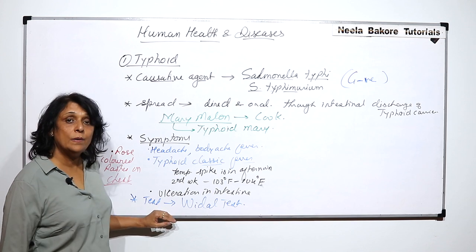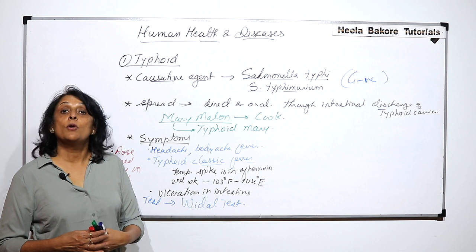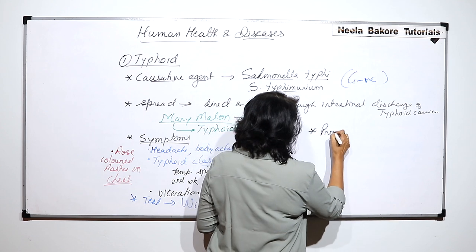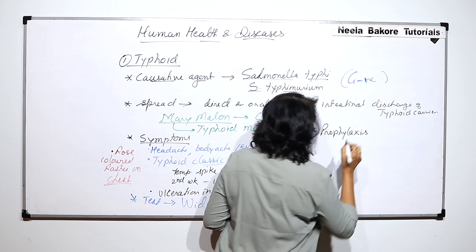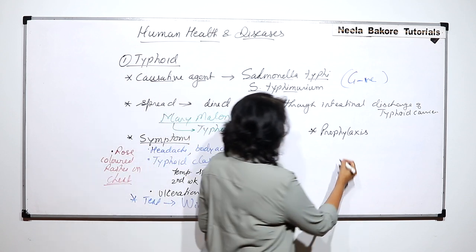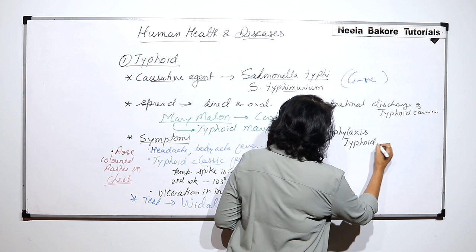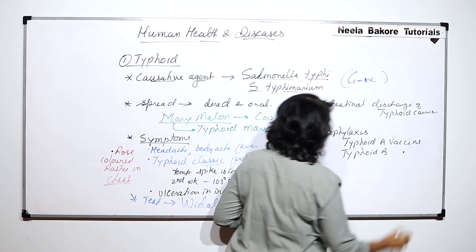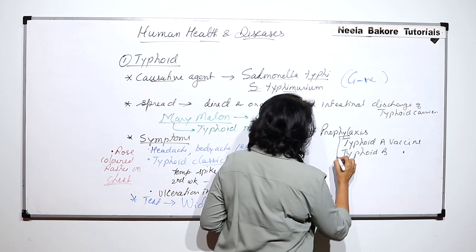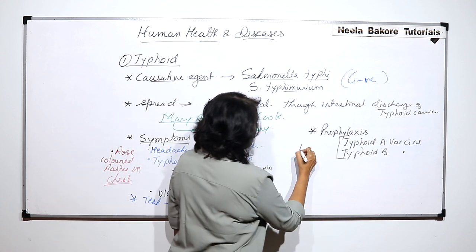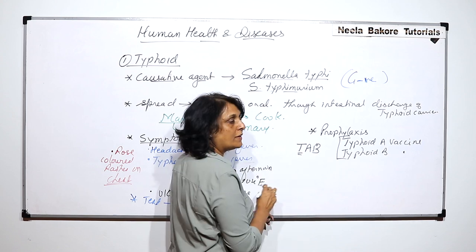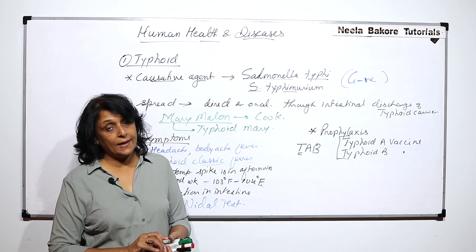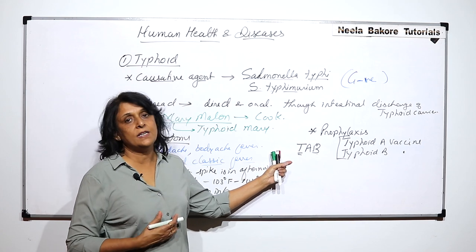How do we treat it, and is there any prophylaxis — meaning can we prevent this infection? For prophylaxis, there are vaccines available called typhoid A vaccine and typhoid B vaccine, for the two different strains of the bacteria. Normally these two vaccines are available as one dose, known as TAB — T for typhoid, A for type A, and B for type B. If we take these vaccines the chances of getting the disease are greatly reduced.